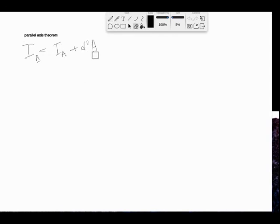Here in dynamics, we're going to be working with the mass moment of inertia. So that's going to be M. And this value D represents the distance between points A and B.